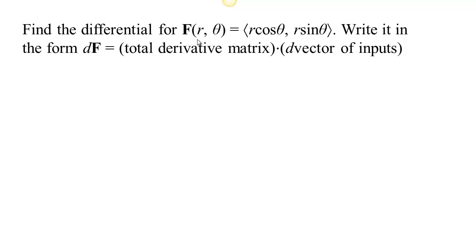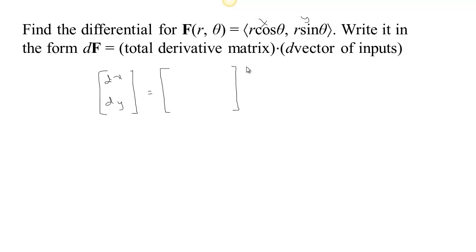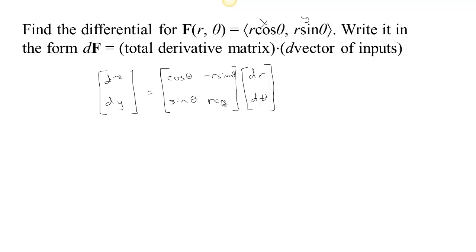This time our function is vector-valued, so there are two inputs, r and theta, but there are also two outputs — you could think of them as x and y. We look at the changes in output: the change in x and the change in y equals the total derivative matrix. Since there are two outputs, there will be two rows; since there are two inputs, there will be two columns. The first column holds rates of change with respect to r: the derivative of x with respect to r is cosine theta, and the derivative of y with respect to r is sine theta. The second column holds rates of change with respect to theta: the derivative of x with respect to theta is minus r sine theta, and the derivative of y with respect to theta is r cosine theta.